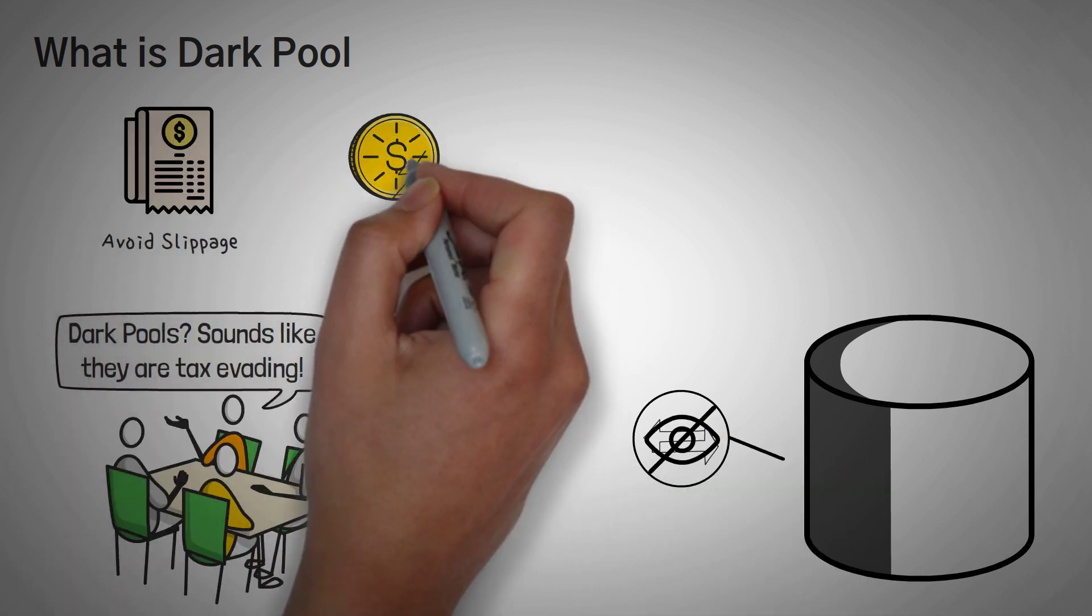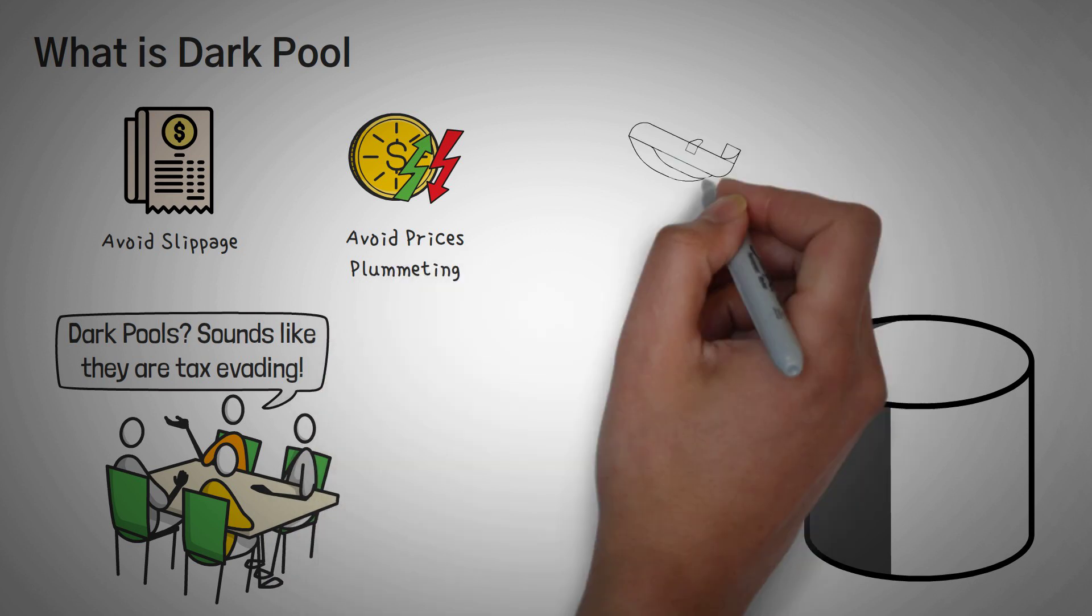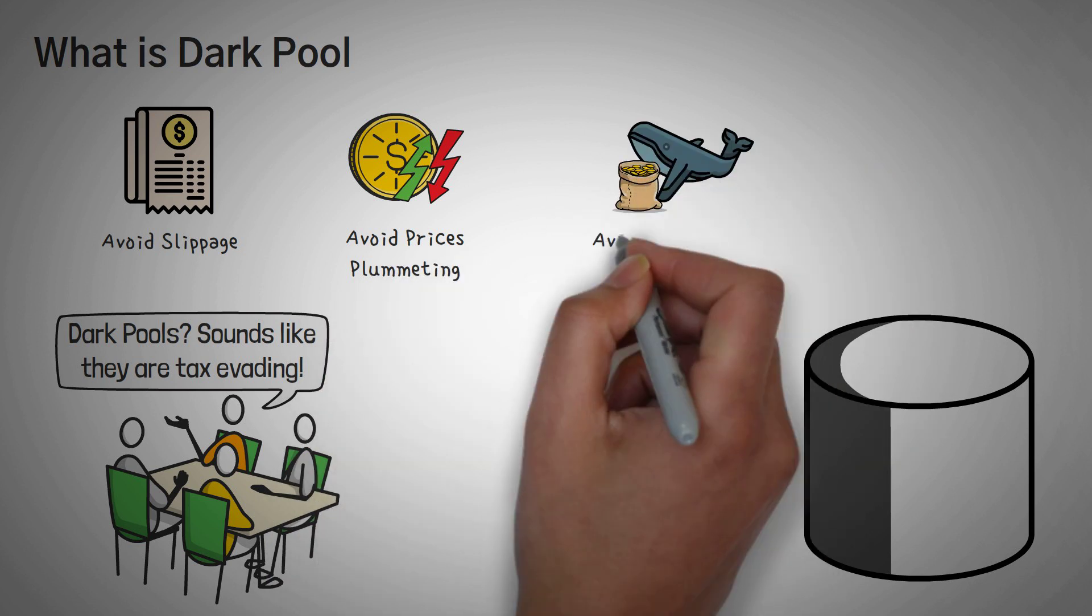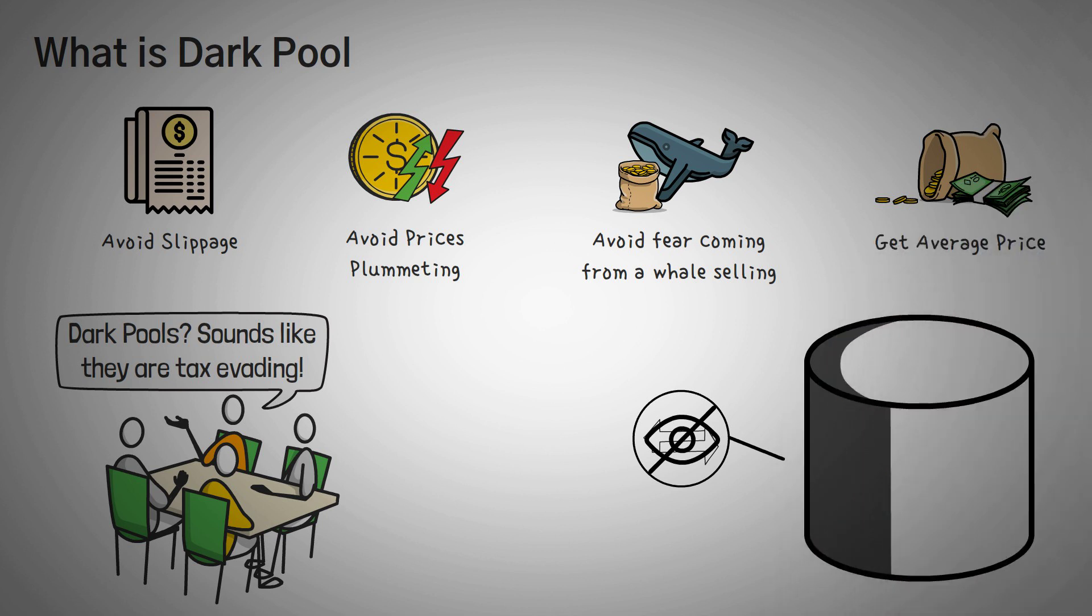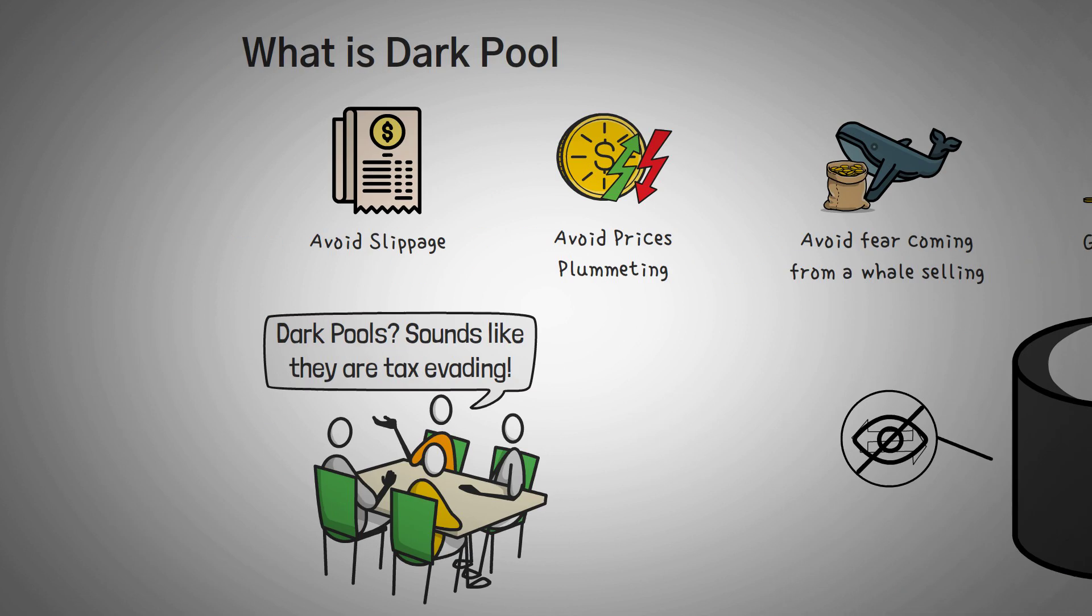This can be used to avoid slippage, to avoid causing prices to plummet, to avoid the fear that comes from seeing a whale selling their coins, or just to get an average price for a large number of crypto. Let's go over each of the benefits of these real quick before explaining exactly how a dark pool actually works.